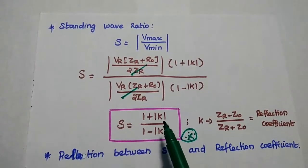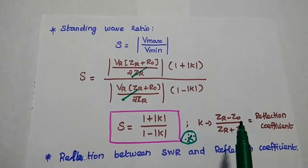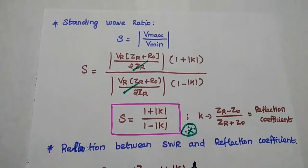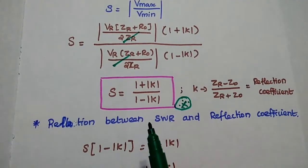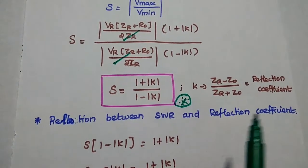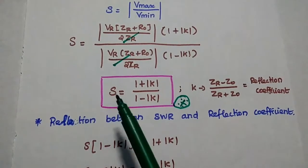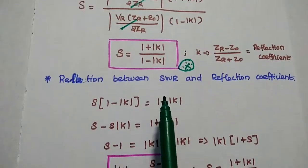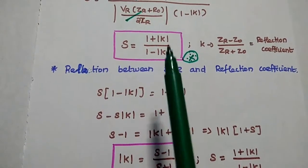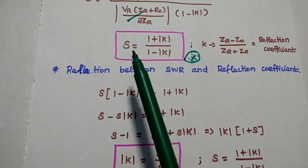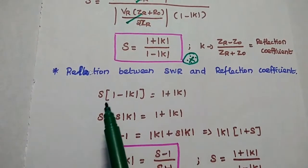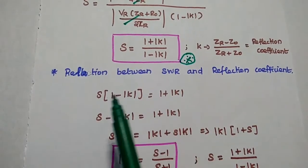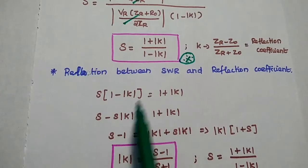Here the K value is Zr minus Z-naught divided by Zr plus Z-naught. Next, the relation between SWR and reflection coefficient — S is expressed in terms of K. The next step is to find K in terms of S. For that, we can simply cross-multiply, giving S into 1 minus modulus of K equals 1 plus K. Then multiplying S inside, we get S minus S times K equals 1 plus K.